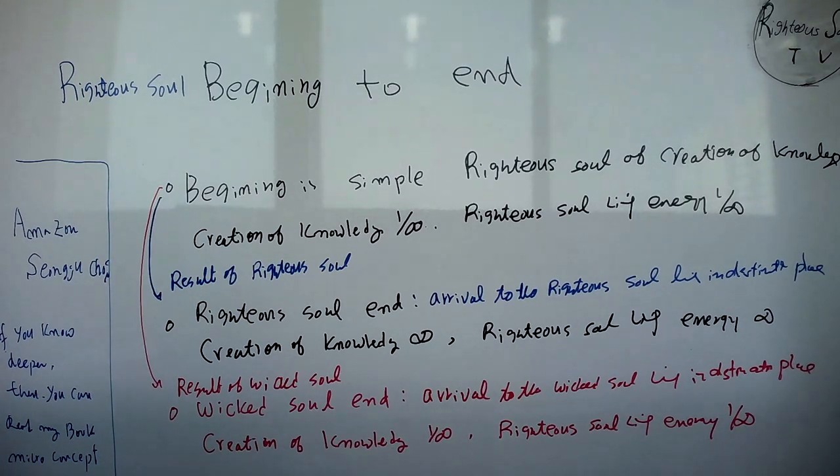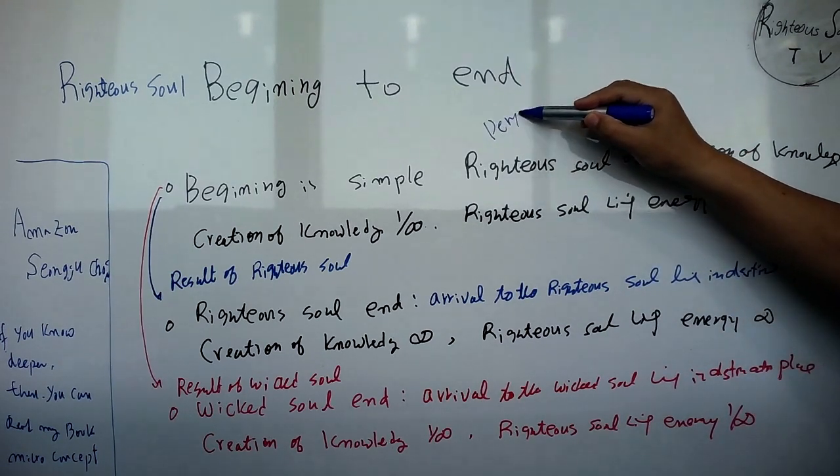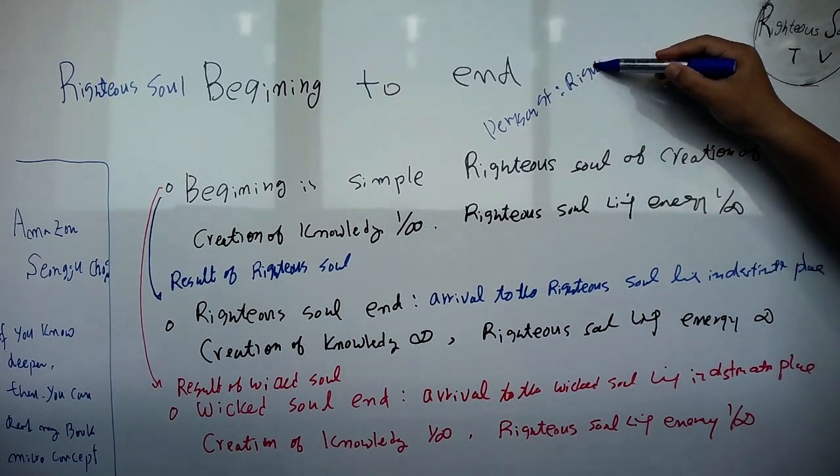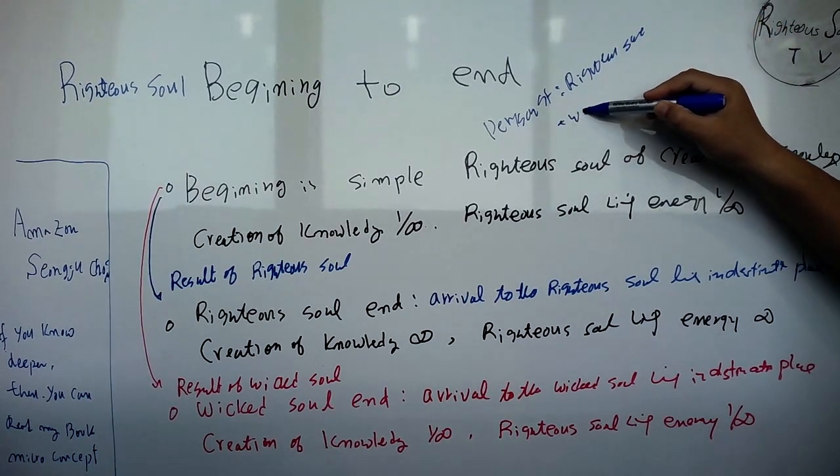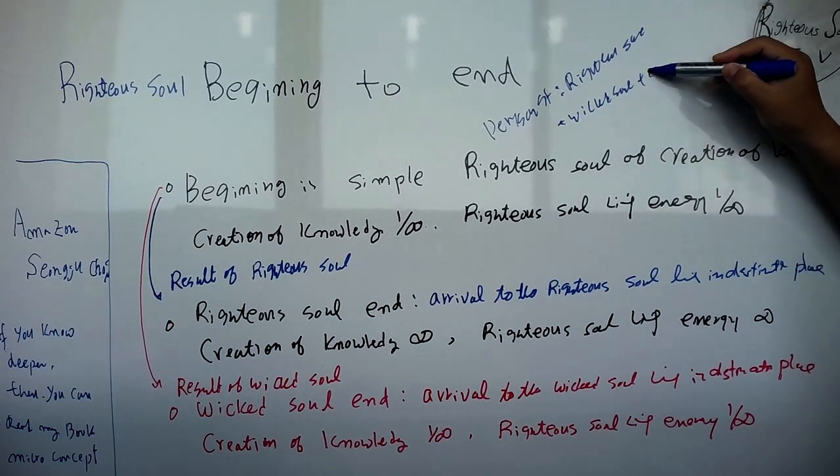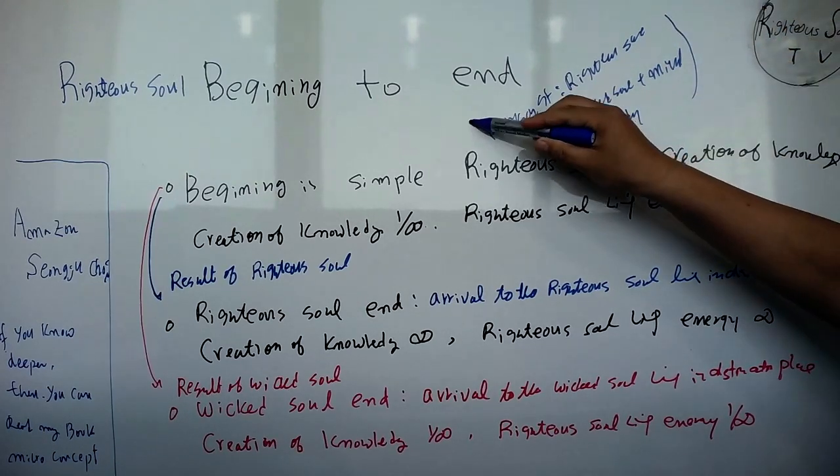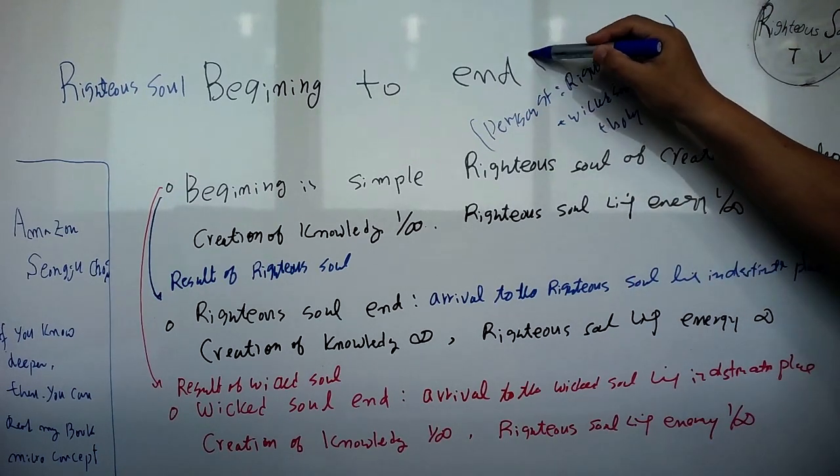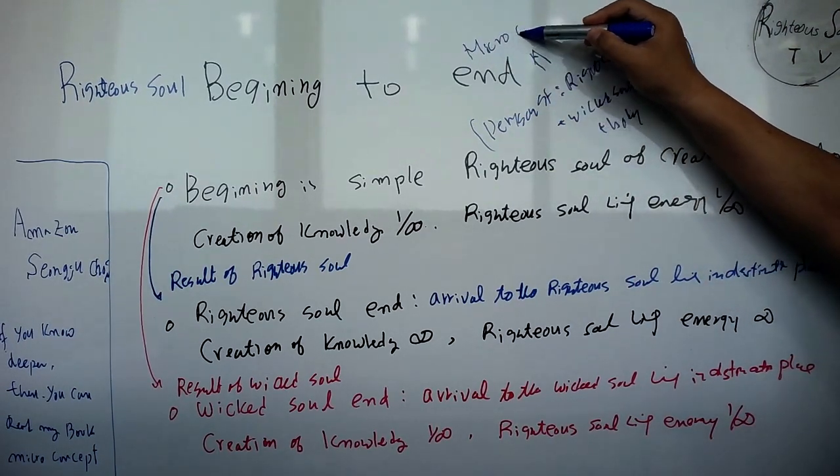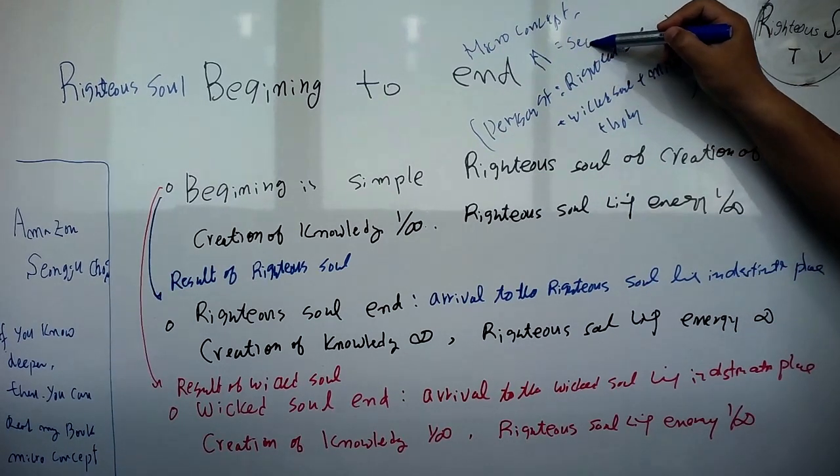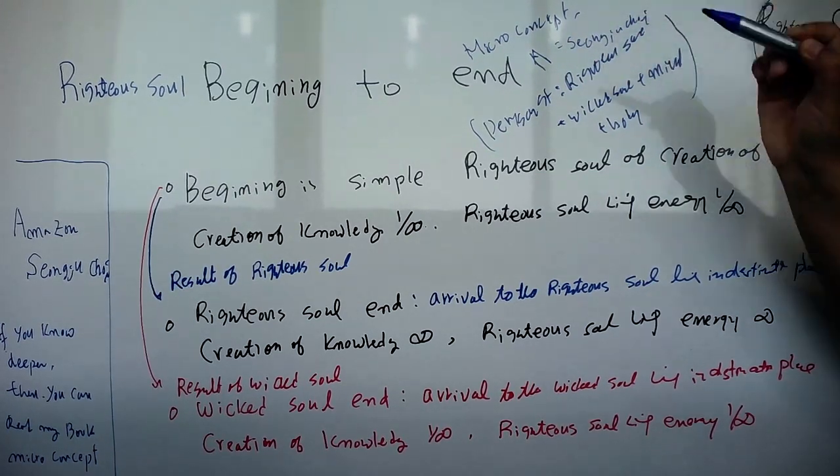We are just living. Person structures - the structure is Righteous Soul plus Jealous Soul plus Wicked Soul plus Mind plus Body. This story you can read in the micro concept books by Songju Choi on Amazon. You can buy them.